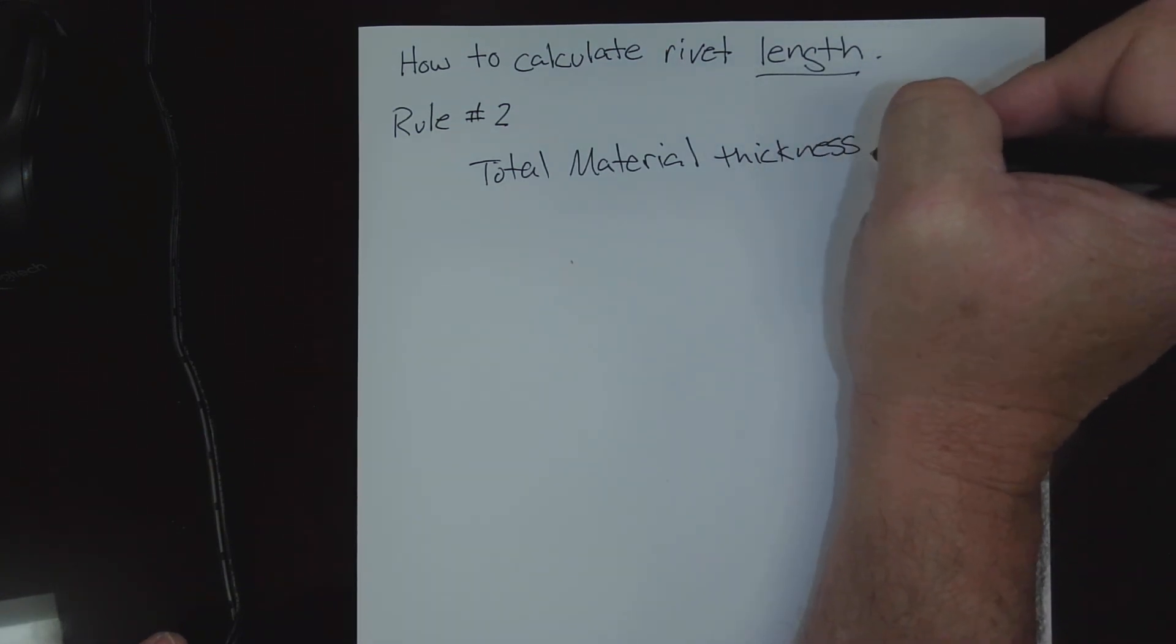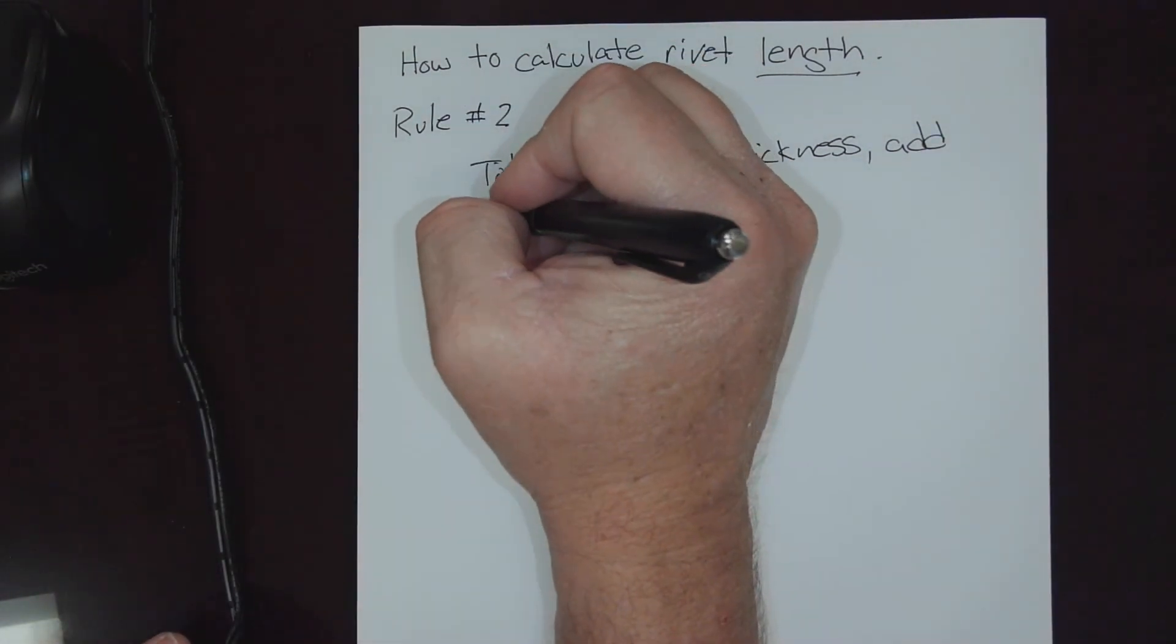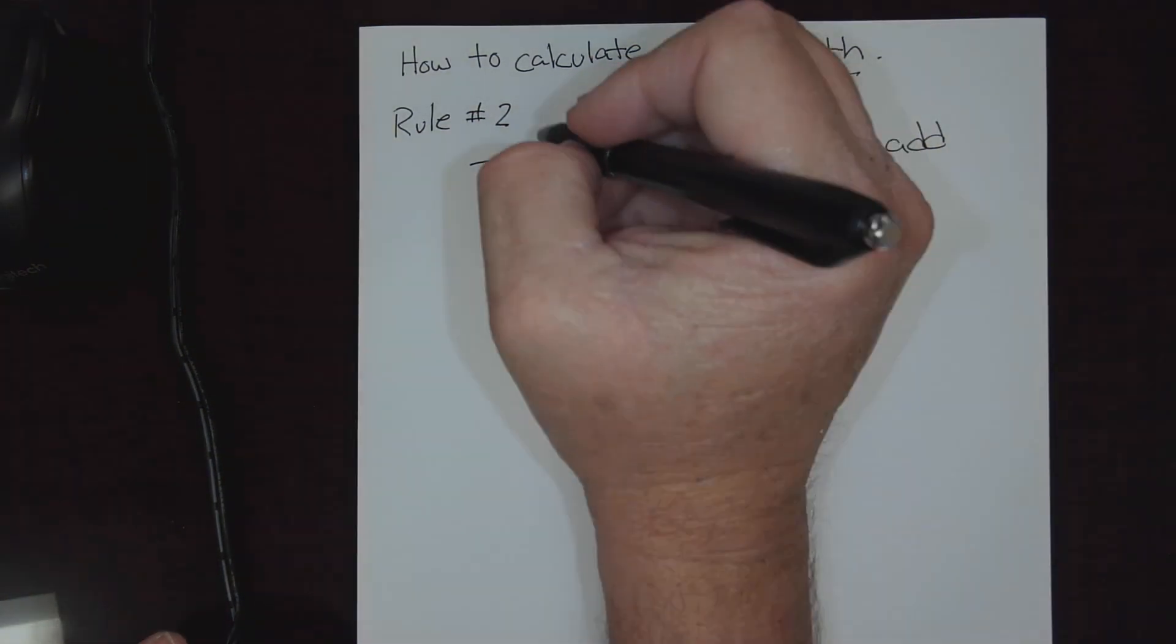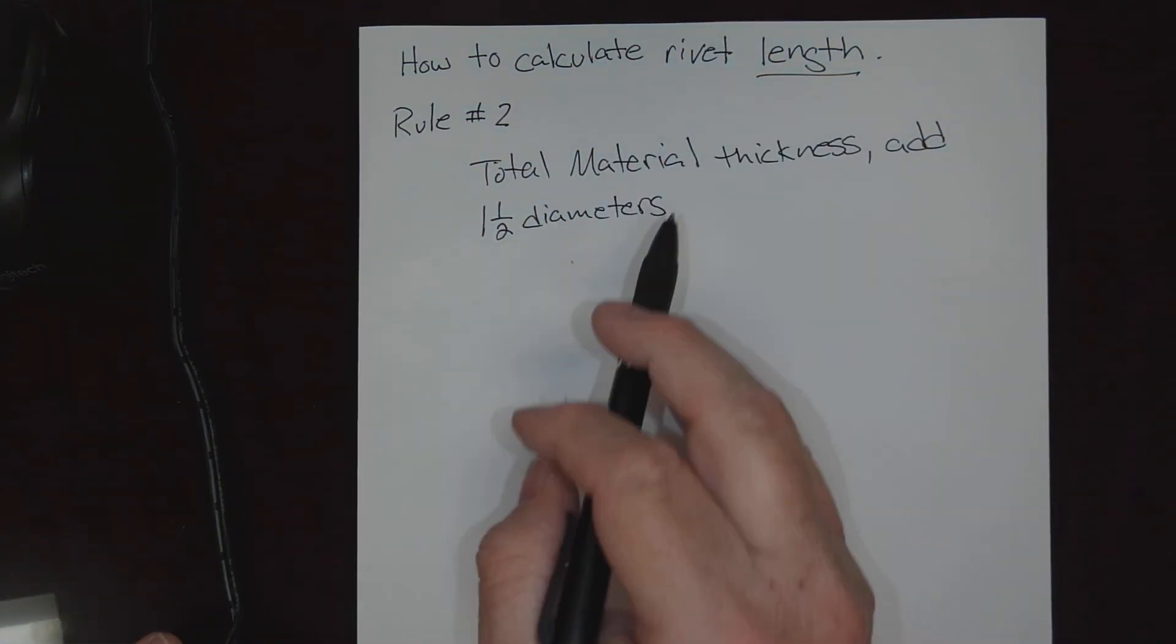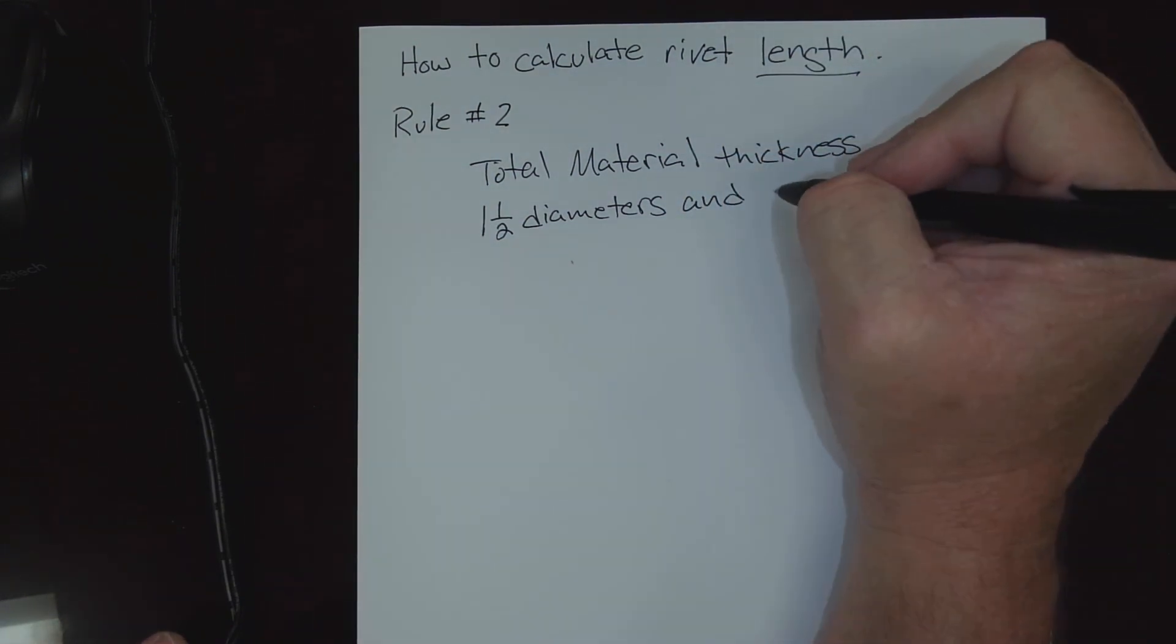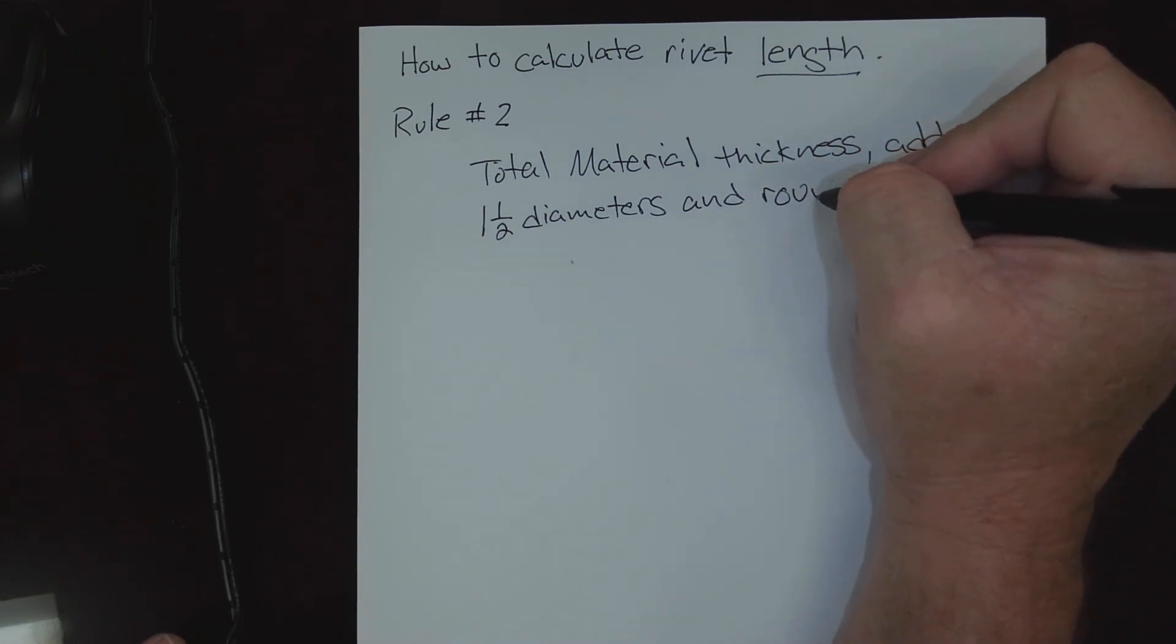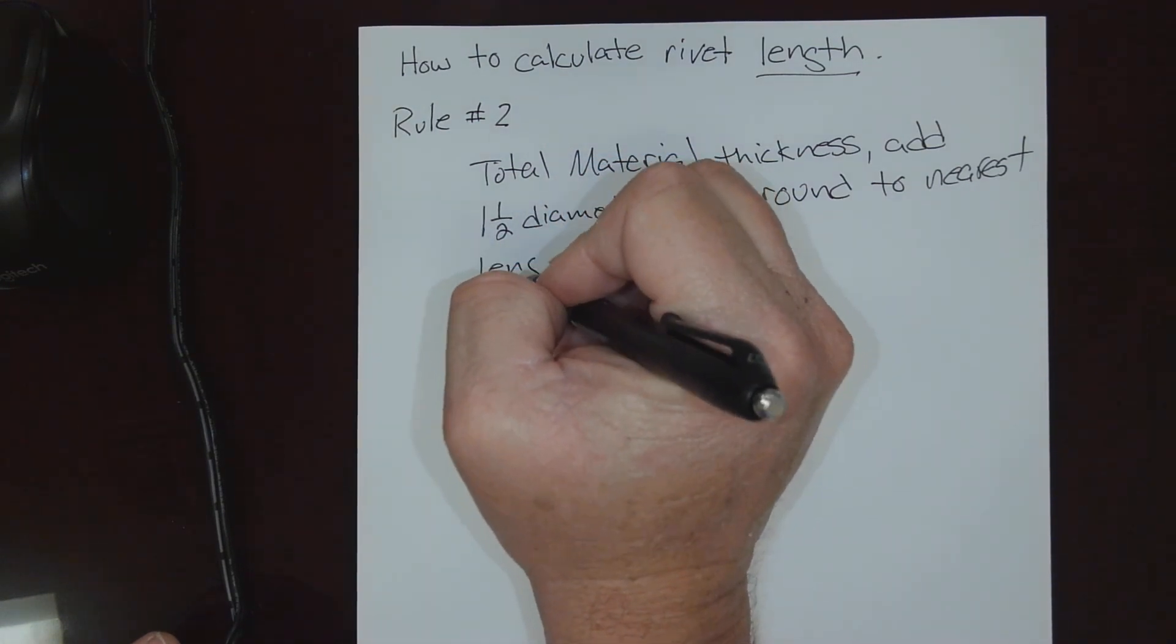And then, there's always a little second part. This time, instead of round up, once we've added our total thickness, we're going to add one and a half diameter. See, that's why we need that diameter information first in order to solve for this. We're going to take our total thickness, add one and a half diameters, and this time instead of rounding up, we're going to round to the nearest length.